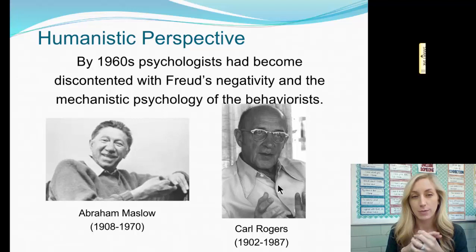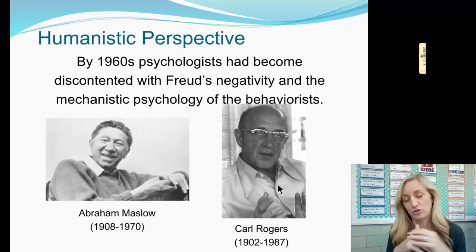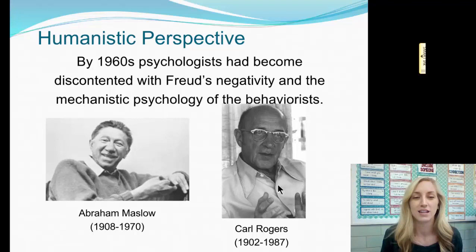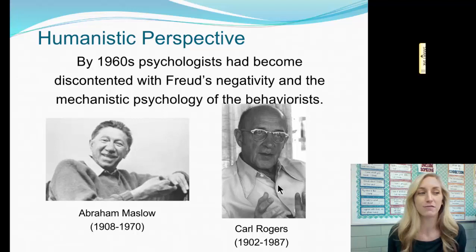By the 1960s, psychologists had become discontented — meaning unhappy — with Freud's negativity. He said we're all bad, we're all sexual aggressive beasts controlled by our unconscious, just pawns of our unconscious. And there was also the mechanistic psychology of the behaviorists, the idea that we're just pawns of other people who make us do things through reinforcement and punishment.